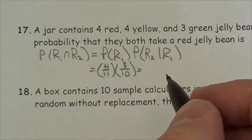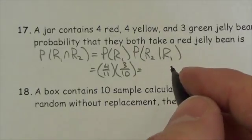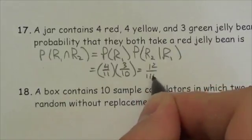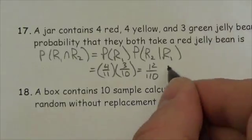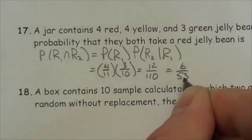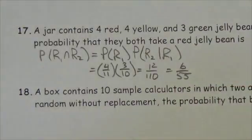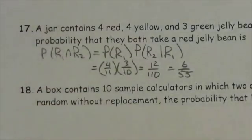And so now when we multiply that through, we're going to get twelve divided by one hundred and ten. And that will reduce down to six over fifty-five. So six out of fifty-five is the probability that they each get a red.